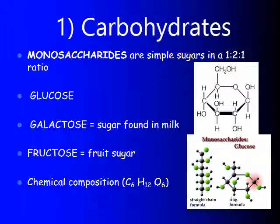The first polymer we're going to talk about are carbohydrates. Carbohydrates themselves are the polymer — those are the chains. Their monomers are called monosaccharides, or simply sugars. So sugars are the links, and when you link them all together, the polymer is called a carbohydrate. Sugars go by many different names because there are many different types: glucose, galactose, fructose. Glucose tends to be the most common one, but there are lots of different types of sugar monomers that can make carbohydrates.